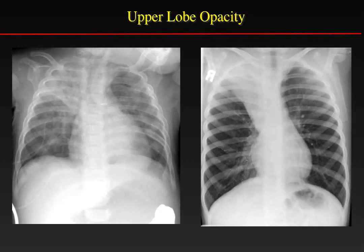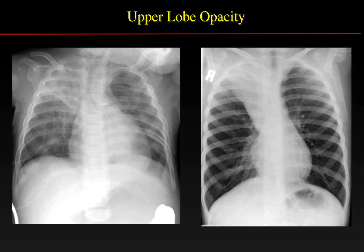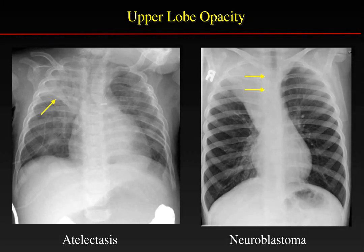Here are two more children with right upper lobe opacity. In the third child, the minor fissure is elevated with loss of volume and patchy atelectasis of the right upper lobe, and the trachea is shifted toward the abnormality — consistent with atelectasis. The fourth child has a very dense lesion in the right upper lobe with no associated atelectasis, we cannot see through the lung, and the trachea is being displaced away from the mass. This is a child with neuroblastoma.